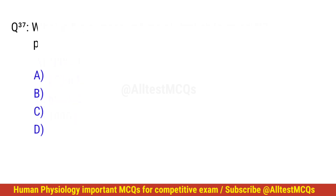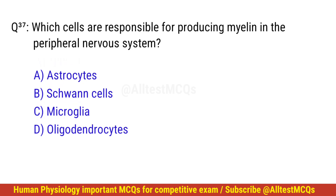Question number 37. Which cells are responsible for producing myelin in the peripheral nervous system? The right option is B: Schwann cells.